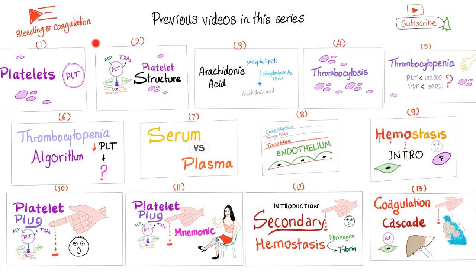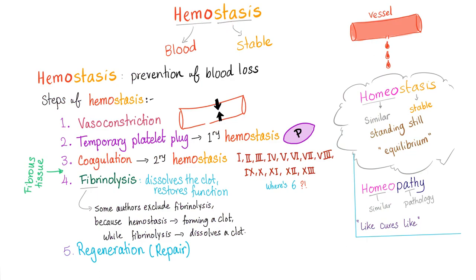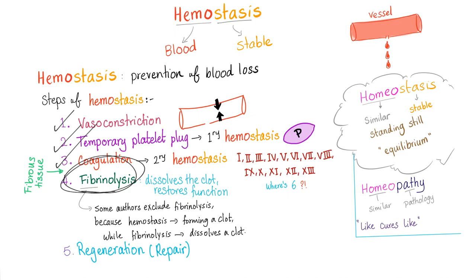Here's just a sample of my previous videos on bleeding and coagulation — that's why you need to subscribe and save this playlist. Hemostasis is the stoppage or prevention of blood loss. It has many steps: vasoconstriction, temporary platelet plug or primary hemostasis, coagulation or the thrombus — the secondary hemostasis — then fibrinolysis, then regeneration and repair. We have talked about vasoconstriction, temporary platelet plug, and coagulation before, and we are now talking about fibrinolysis.